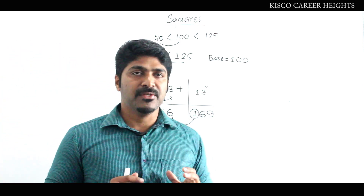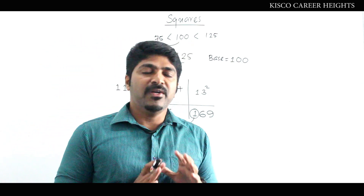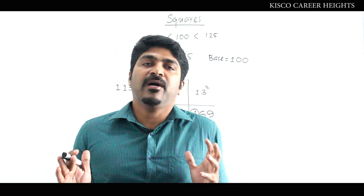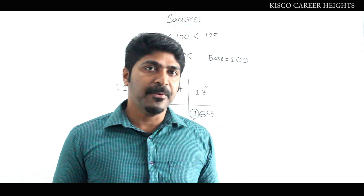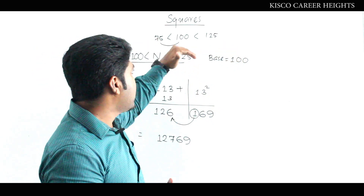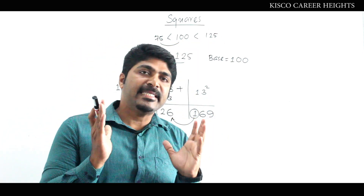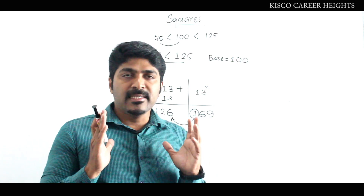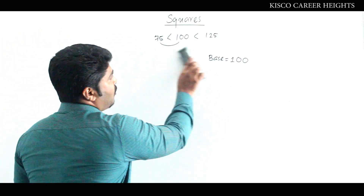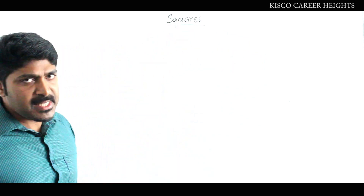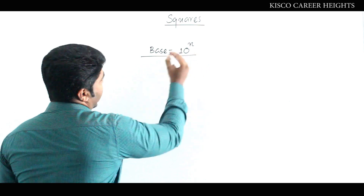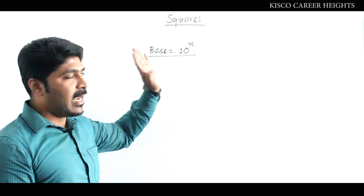This is the easiest way to find squares in the range up to 125. In the first video, I discussed squares from 25 to 75; in this second video, we covered 75 to 125. Now, how can we extend this method to three-digit or four-digit numbers? We consider different bases — specifically bases in the form of powers of 10, such as 10, 100, 1000, and so on. This is a general, magical approach based on 10 raised to n.